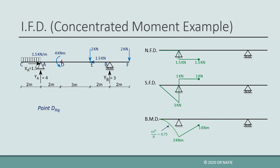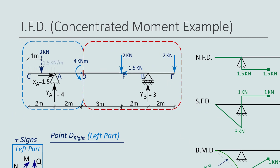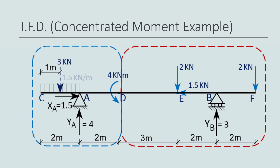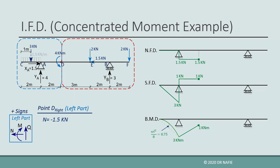We evaluate the internal forces just to the right of point D, again using the left part. Because the cut is now to the right of D, point D is in the left part, and the 4 kN concentrated moment now belongs to the left part. The normal force is negative 1.5 kN and the shear force is positive 1 kN, as before. The bending moment is evaluated as the 3 kN force times 3 m (negative), plus YA times 2 m (positive), plus the negative 4 kN·m concentrated moment, giving negative 5 kN·m.